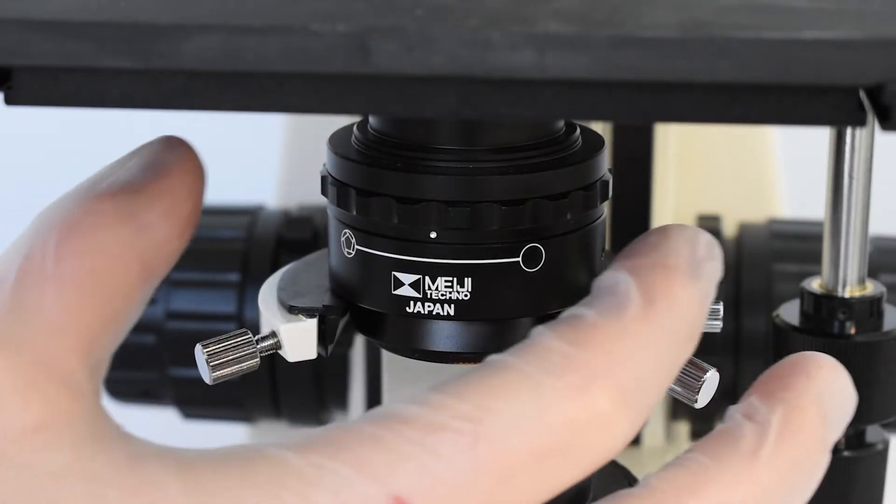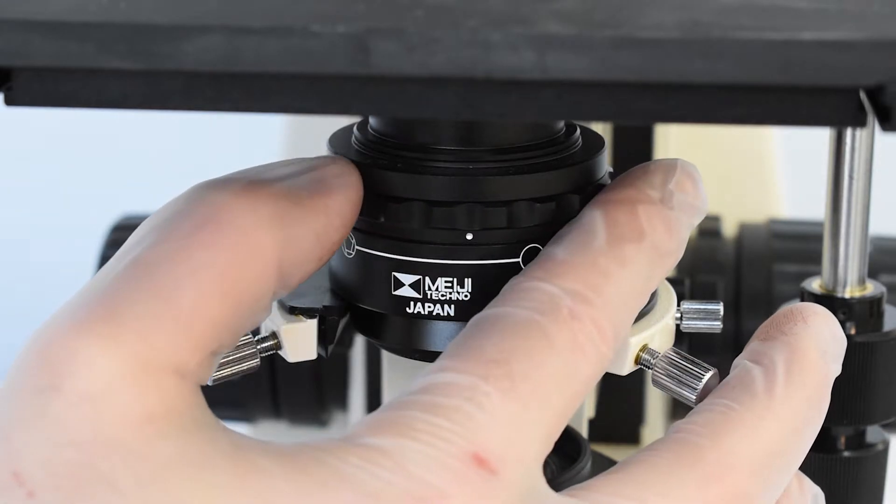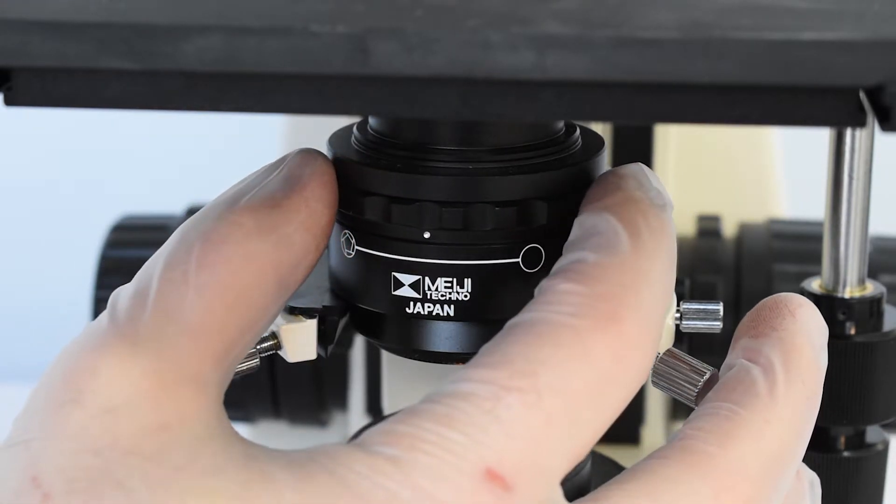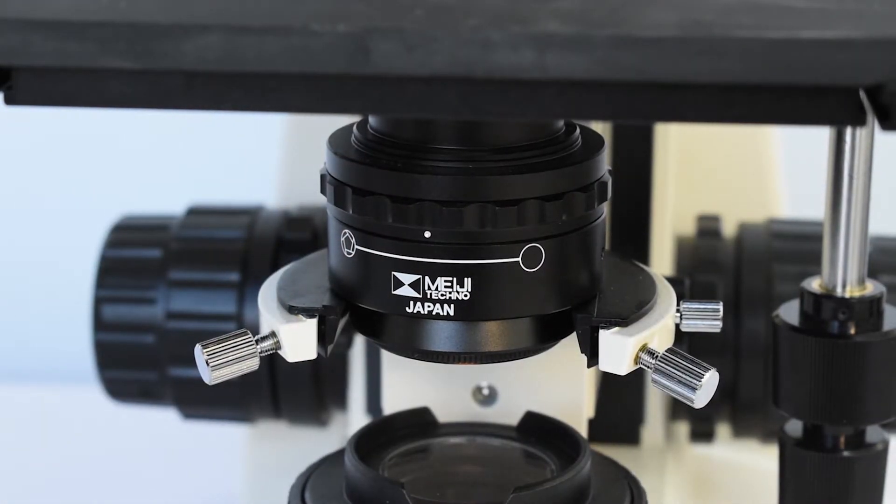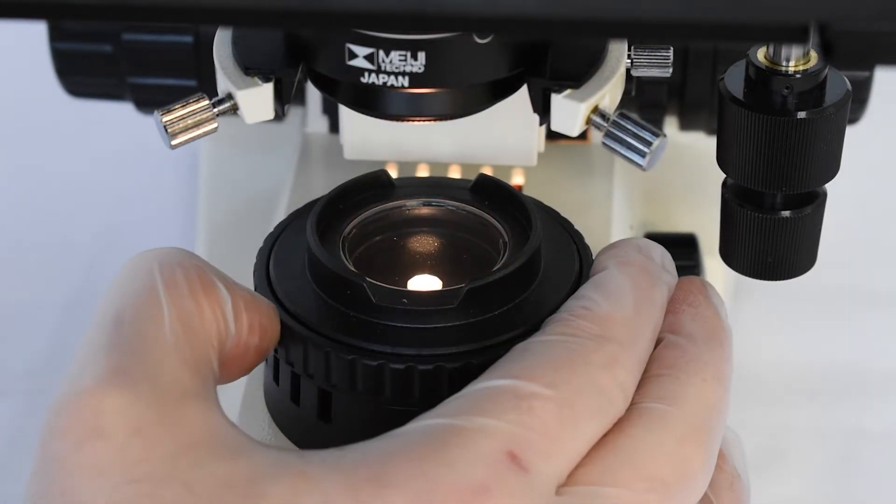To carry out this procedure it is necessary to use the condenser controls, height adjustment, centering screws, and aperture diaphragm. Also, the field diaphragm of the collector lens is important.